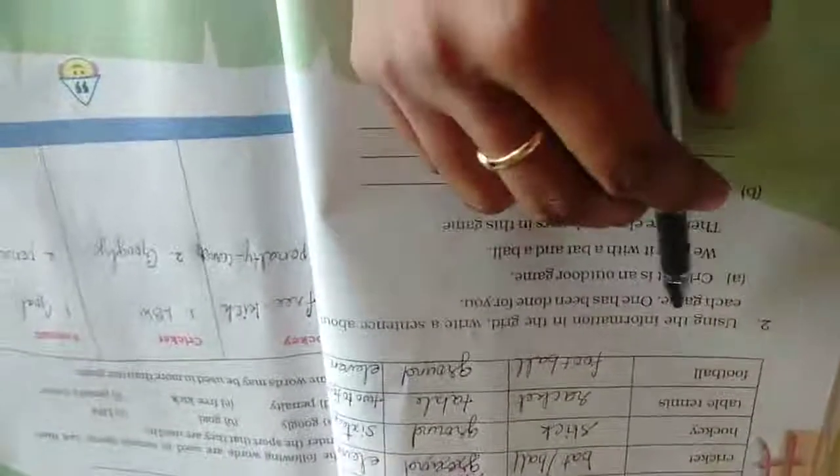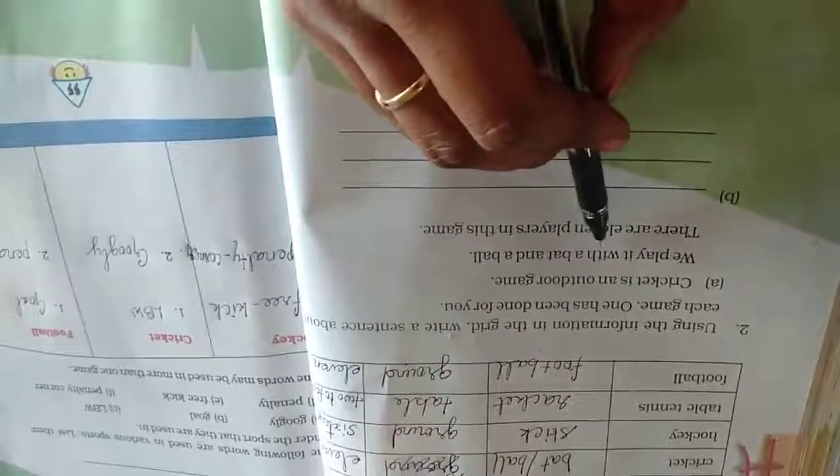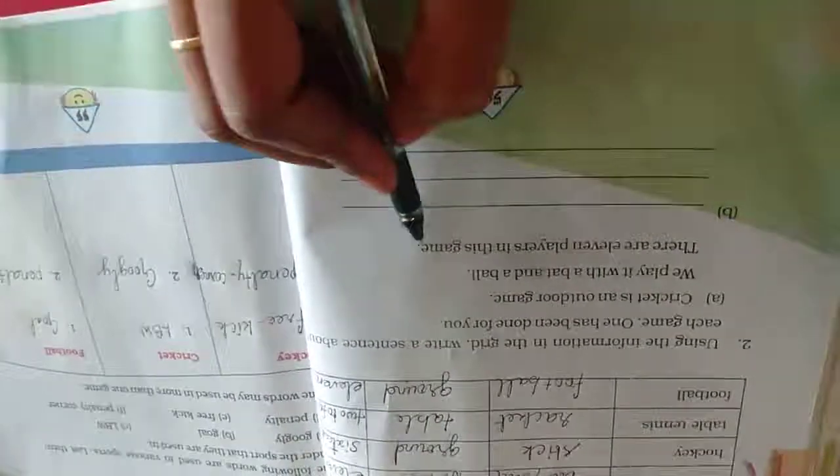Using the information in the grid, you write a sentence about each game. One has been done for you. Cricket is an outdoor game. We play it with a bat and ball. There are eleven players in this game. Next one, hockey.